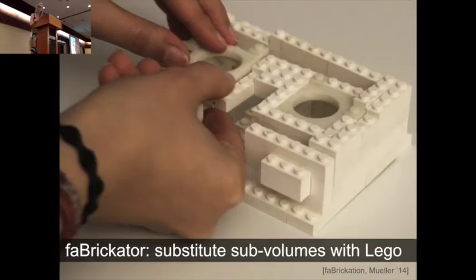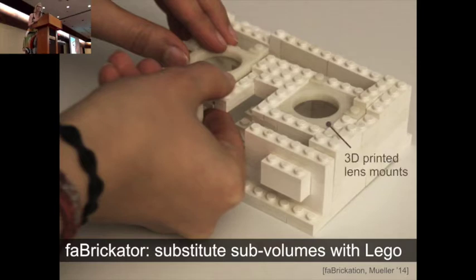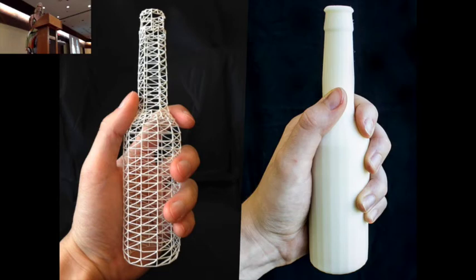At CHI we showed our LowFab system Fabricate, that substitutes some parts of the 3D model with Lego bricks and uses 3D printing only for the few parts that require high resolution. So Fabricate is fast, but as you can see it represents the overall shape of the object only on a very coarse level. WirePrint in contrast preserves the shape very well and is useful for design iterations where shape is really important.